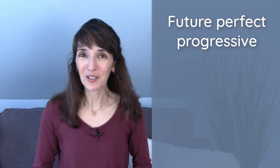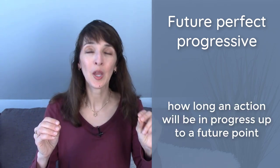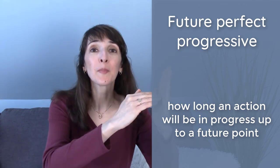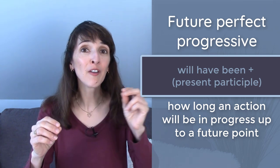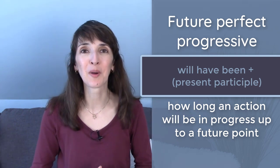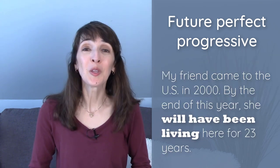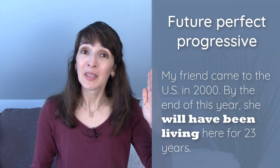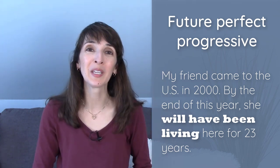The future perfect progressive allows us to talk about how long an action will be in progress up to a future point in time. We use will have been plus the present participle. My friend came to the U.S. in 2000. By the end of this year, she will have been living here for 23 years.